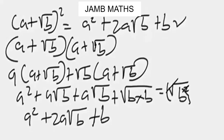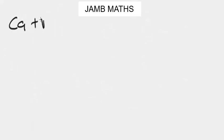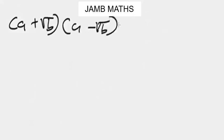Now let's look at the fifth rule. When we have bracket a plus square root of b, times bracket a minus square root of b, our final result is a squared minus b.